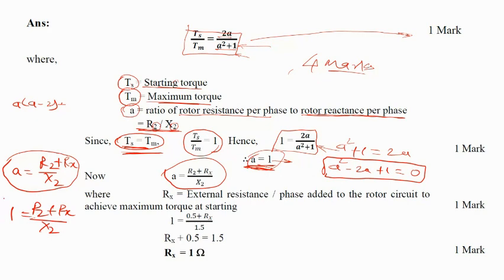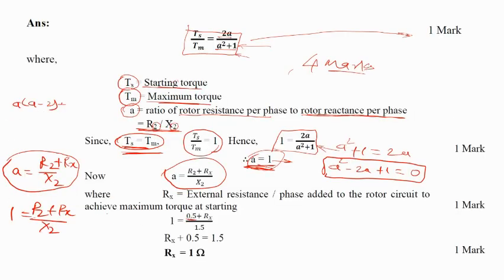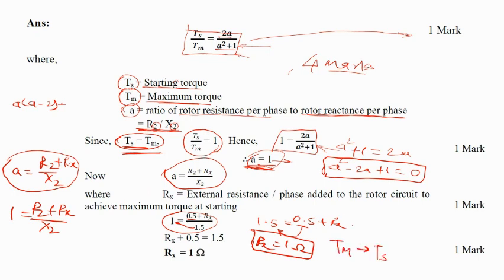We have the given values: r2 = 0.5 Ω and x2 = 1.5 Ω. Substituting into 1 = (r2 + rx) / x2 gives 1.5 = 0.5 + rx, so rx = 1 Ω. This is the value of extra resistance that must be added in the rotor circuit so that we get maximum torque at the time of starting.